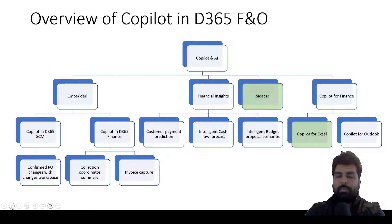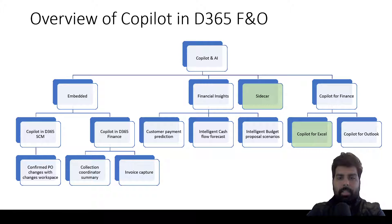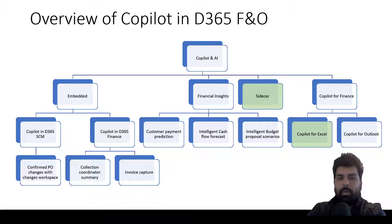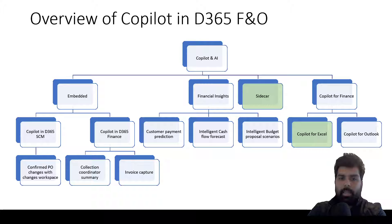This is a chart I created based on my understanding of the features and capabilities in Microsoft Dynamics 365, and I've also included something for Copilot for Finance. There is a difference between Copilot for Finance and Copilot for Microsoft Dynamics 365 Finance — these are two different things. It's a disclaimer that this may change in future because Microsoft is releasing a lot of features rapidly, but this is just to give you a broader idea of how to categorize the different features within FNO.